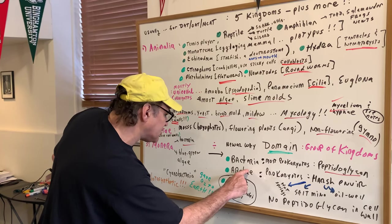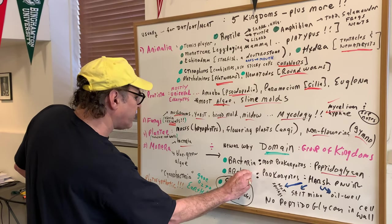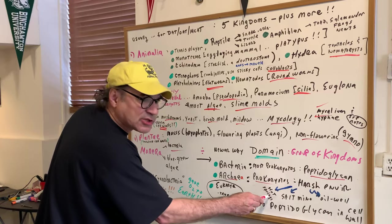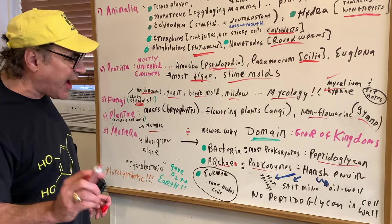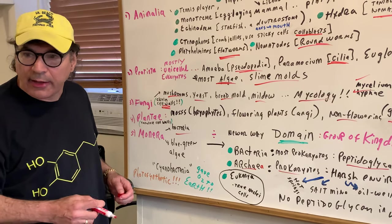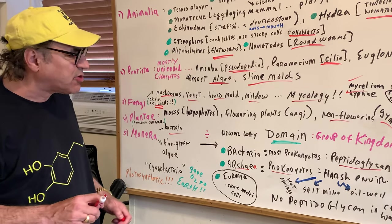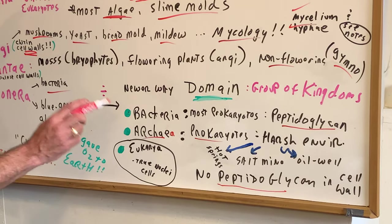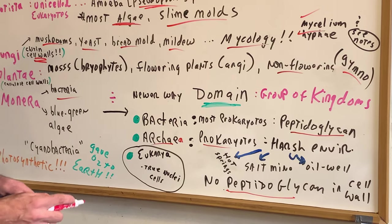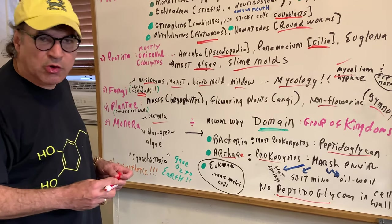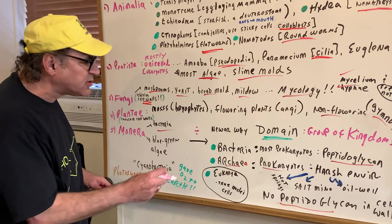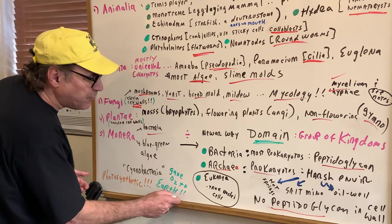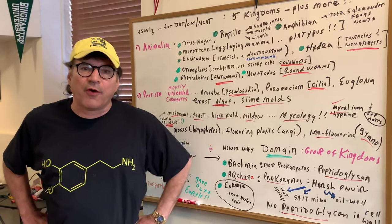The domain Bacteria contains mostly the prokaryotes we discussed — they have peptidoglycan in their cell walls. The Archaea are also prokaryotes, but they live in harsh environments such as hot springs, volcanoes, salt mines, and oil wells. They are non-pathogenic — they don't cause disease, so they're sort of the good guys. The big difference is they have cell walls but no peptidoglycan — they have other proteins, and some scientists suggest calling it pseudopeptidoglycan. In addition, we have Bacteria, Archaea, and Eukarya — organisms with true nuclei in their cells.